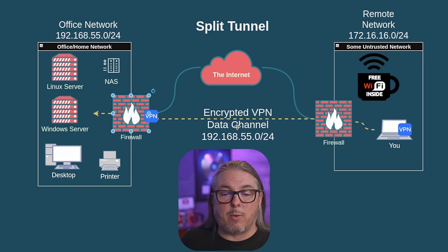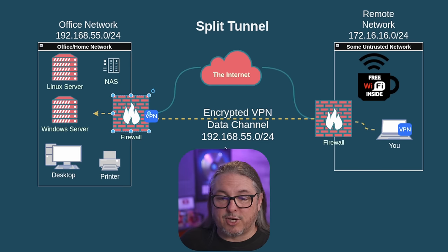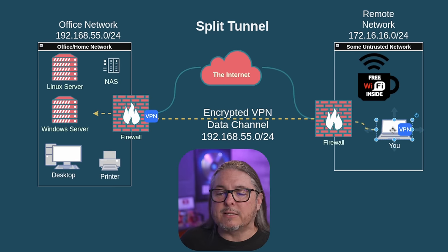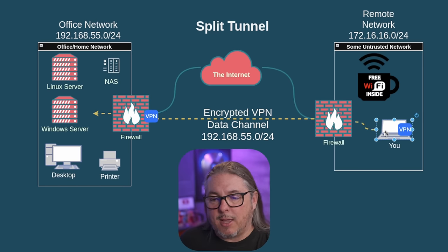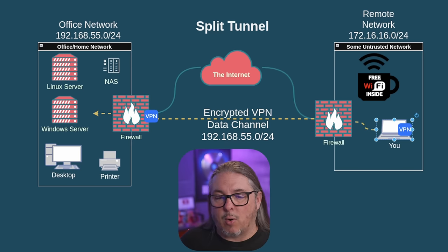From that we create an encrypted data channel. We have the outer layer — the communication channel — and the encrypted data channel, and we're going to get to the resources at 192.168.55.0/24. Anytime you want to access one of those servers in that IP range, it will automatically send that out over the encrypted tunnel, and any other traffic — surfing the web, etc. — just goes out through the normal internet. That's a pretty common VPN setup.